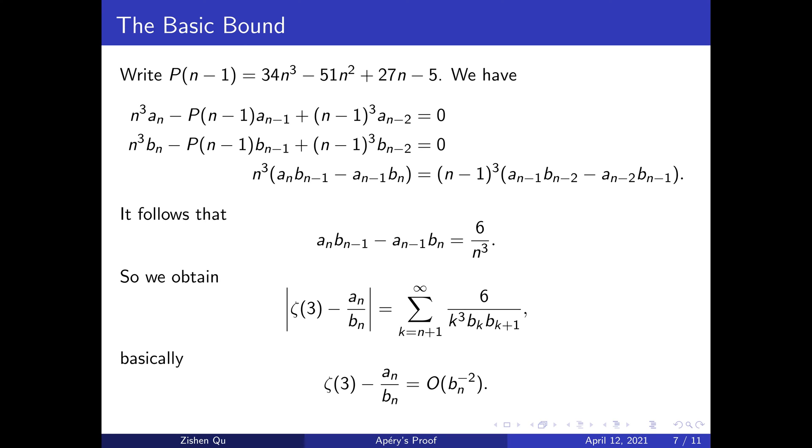This is almost enough for us to prove that ζ(3) is irrational. In fact, if a_n and b_n were integers, then this would suffice. But a_n is not an integer, so we have to compute the error based on the denominator of this approximation.